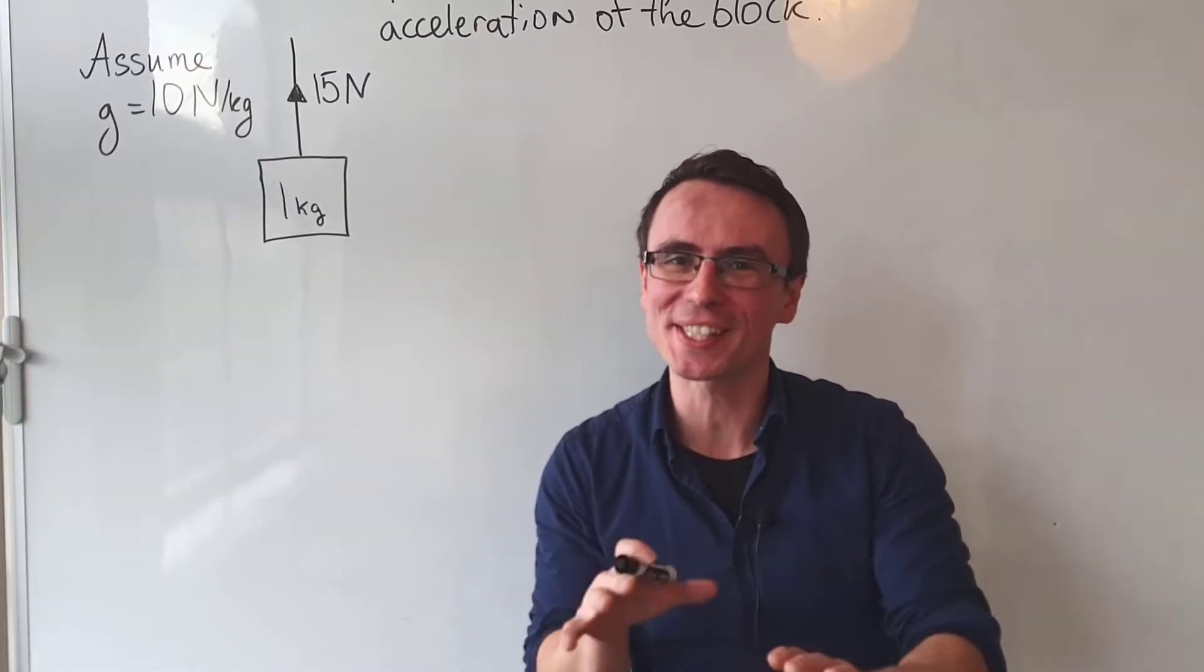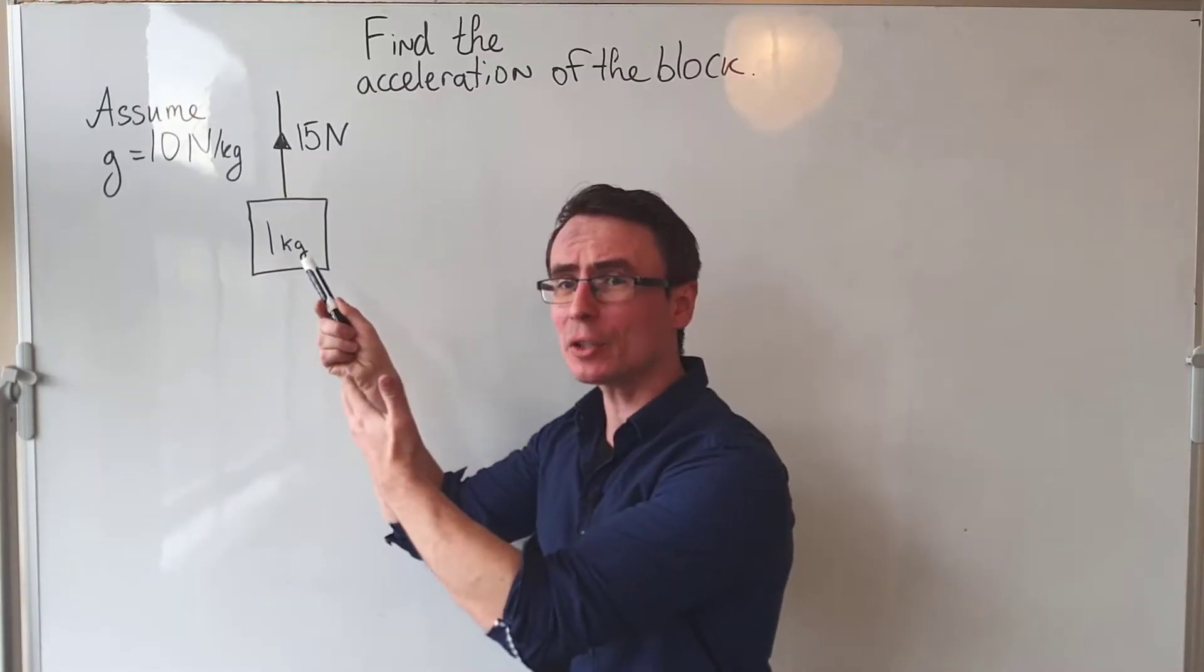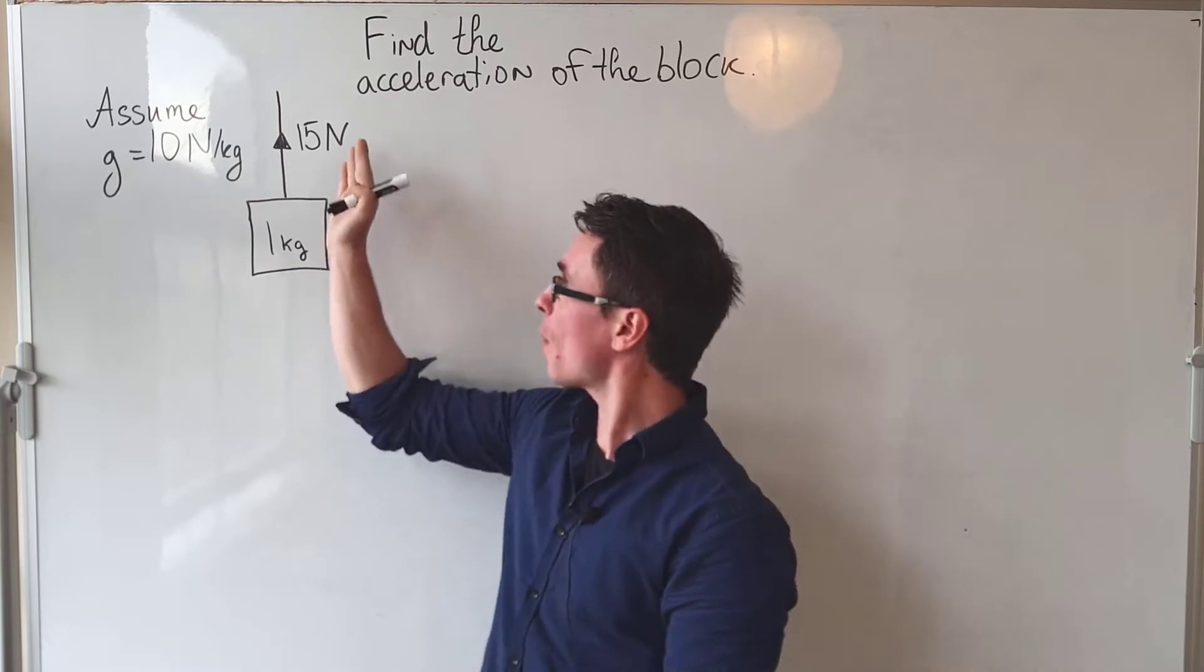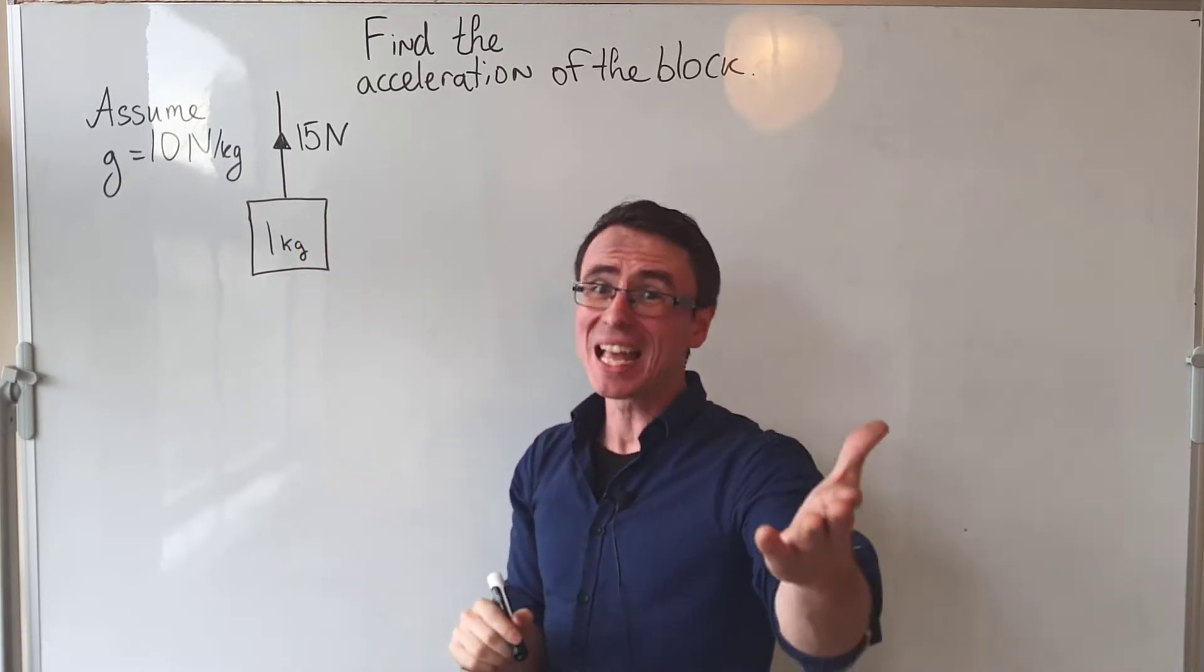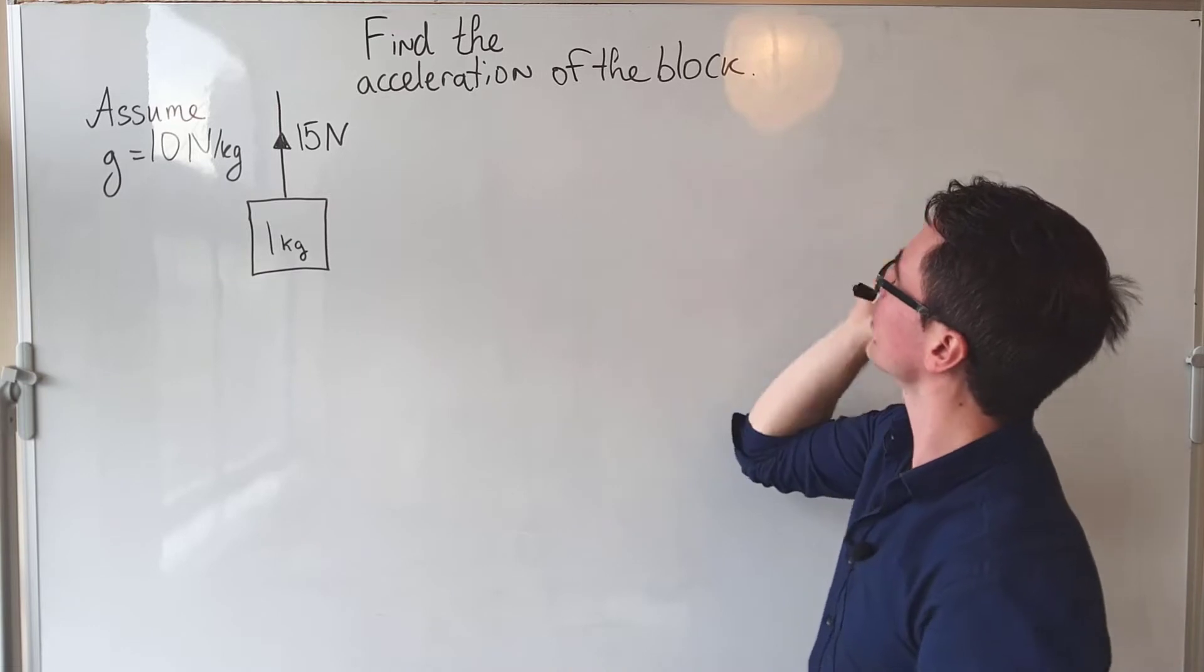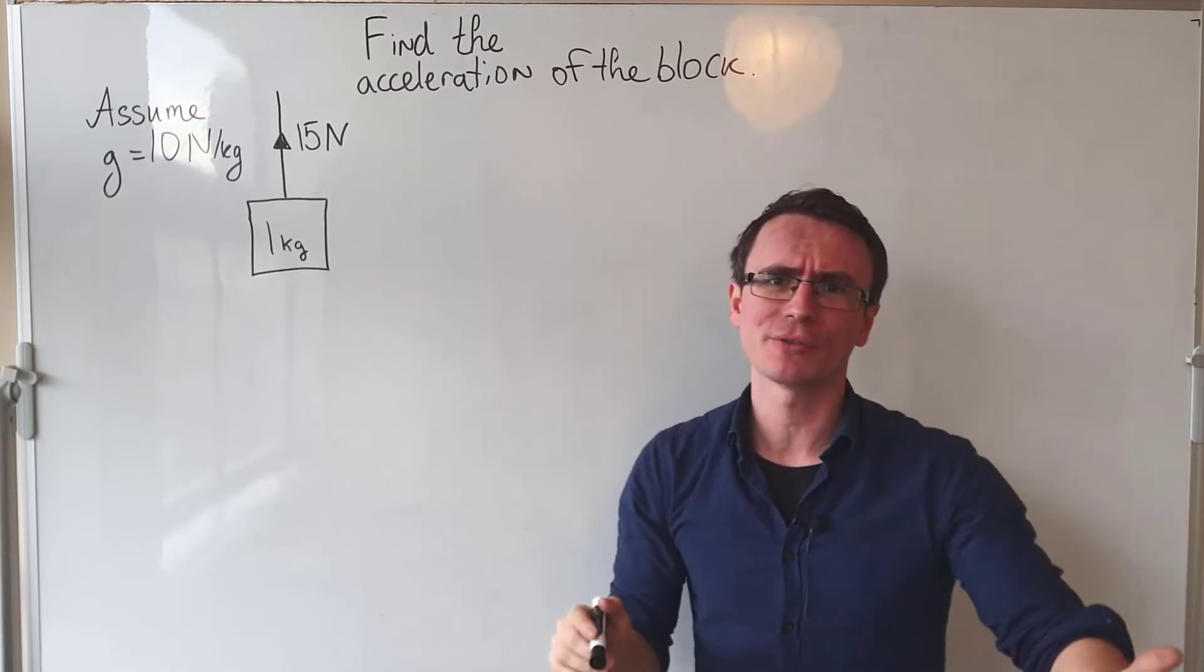Here's an extremely common GCSE physics mistake. We have a one kilogram block that is being pulled upwards by a force of 15 newtons. What we need to do is find the acceleration of the block.